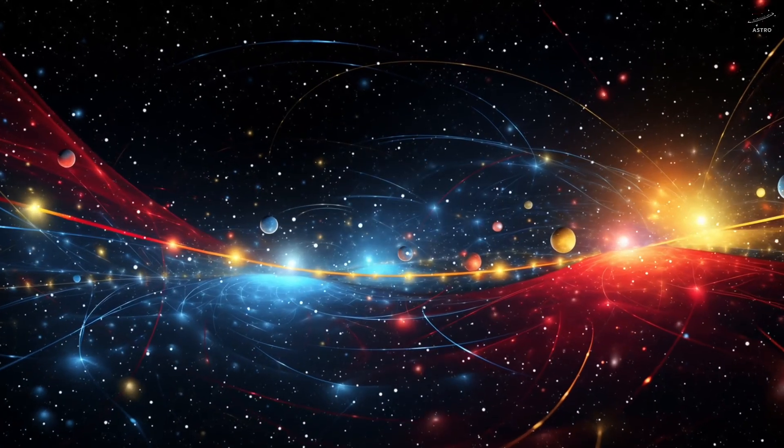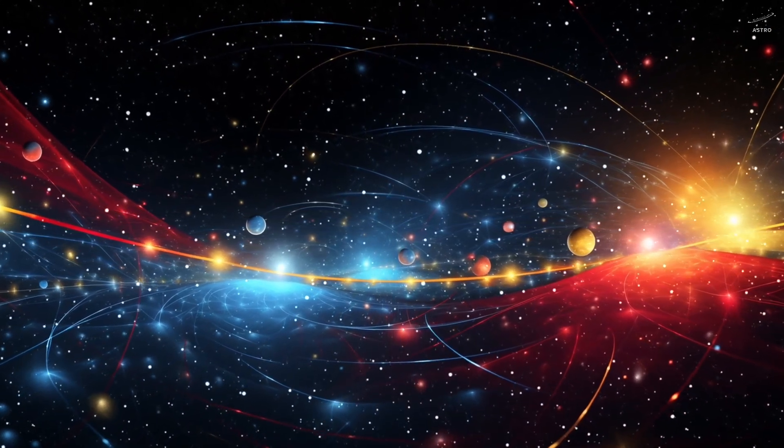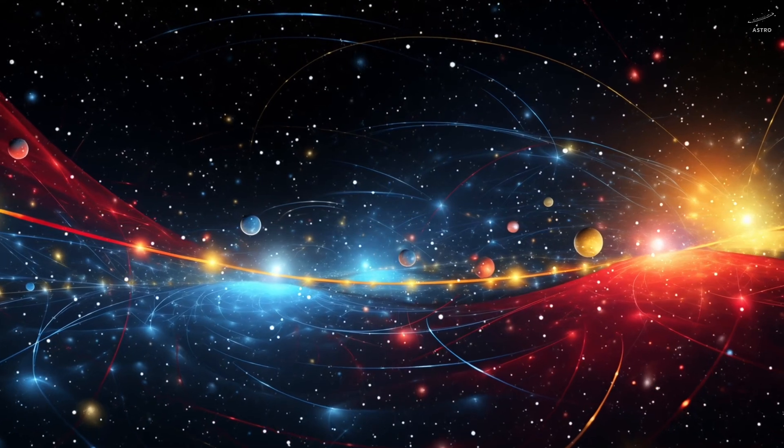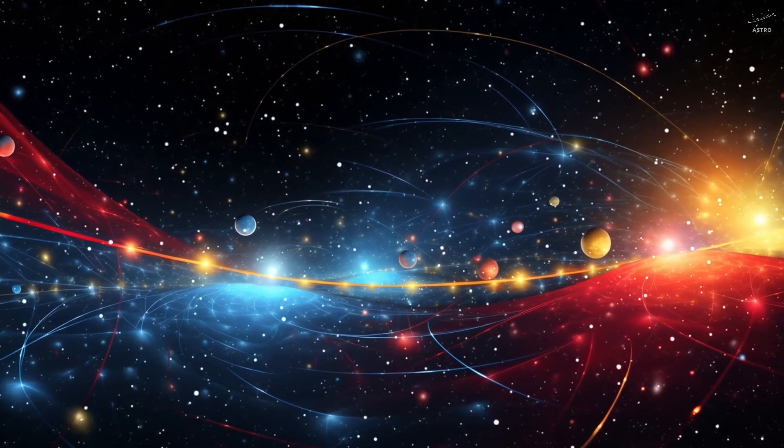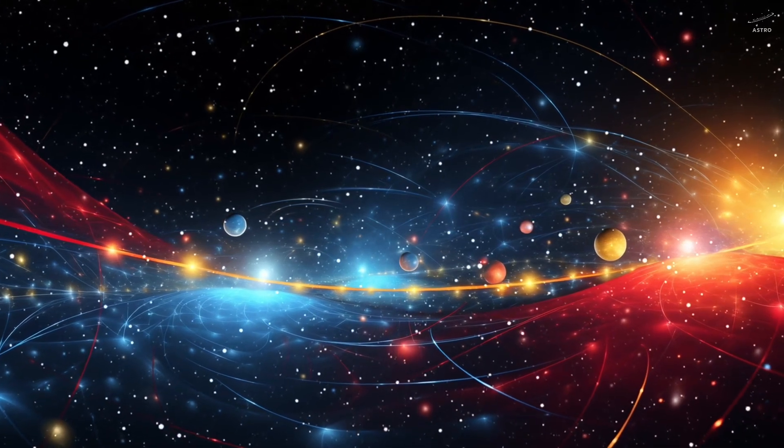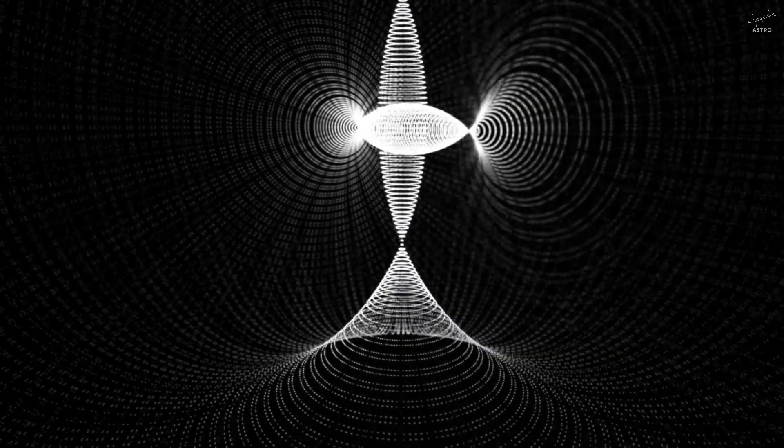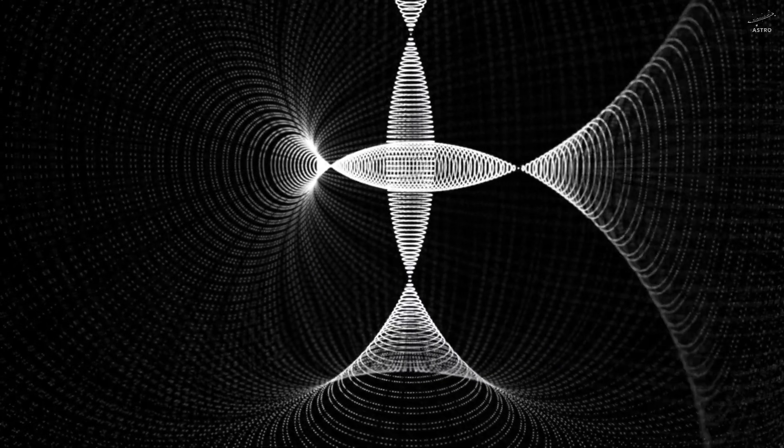Imagine the universe as a vast, stretched-out fabric. A smooth, flexible sheet. Now place something massive on it. Like the sun. It doesn't just sit still. It sinks into the fabric, creating a deep, invisible well. That curve, that distortion, is gravity.